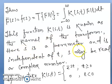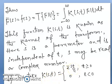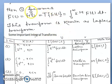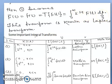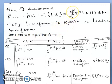Here s is the parameter, which may be real or complex. If we take k(s,t) equal to e^(−st) when t is greater than or equal to 0, and 0 when t is less than 0, then the integral F̄(s) becomes the integral from 0 to infinity of e^(−st) f(t) dt. This integral is known as the Laplace transform, where the kernel k(s,t) is e^(−st).